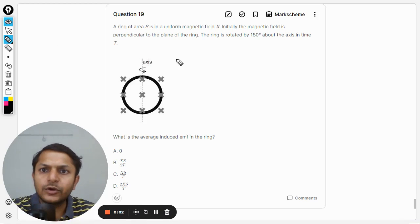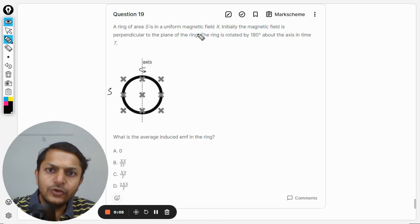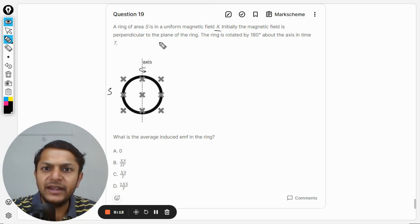Okay, dear students, let us see what is there in this question. A ring of area S is in a uniform magnetic field X. So the magnetic field value is given as X. Initially, the magnetic field is perpendicular to the plane of the ring.